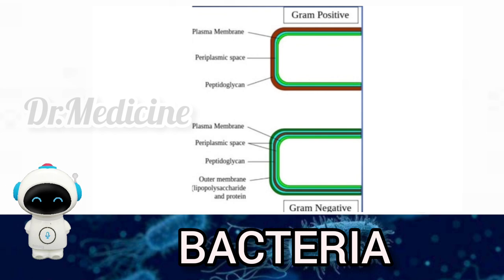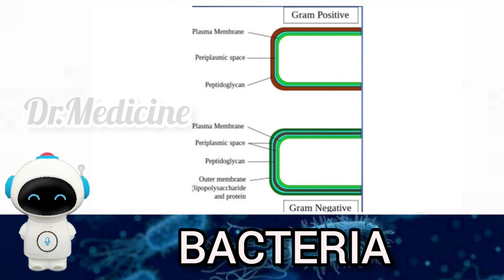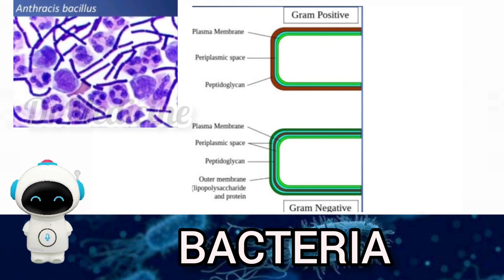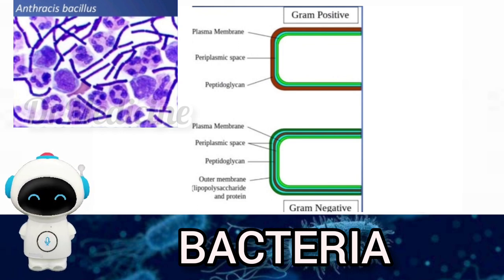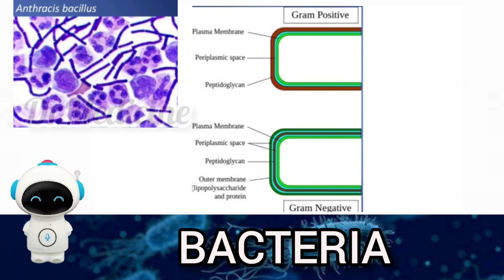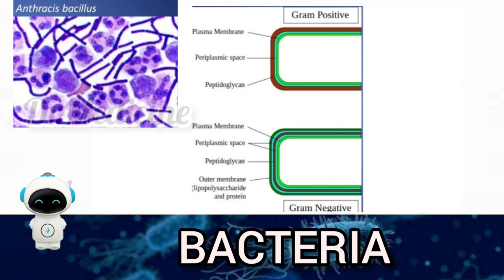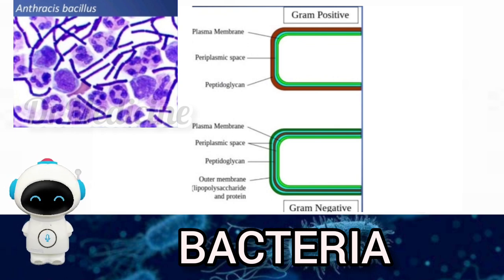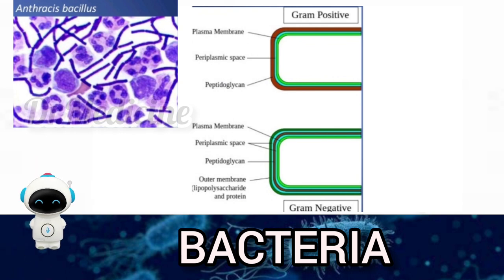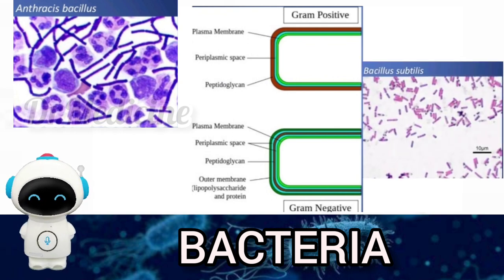Gram positive versus gram negative bacteria: gram positive bacteria contain a plasma membrane, periplasmic space, and peptidoglycan. Whereas gram negative bacteria contain a plasma membrane, periplasmic space, peptidoglycan, and an outer membrane with lipopolysaccharide and protein. An example of gram negative bacteria is Bacillus subtilis.